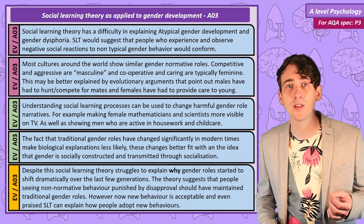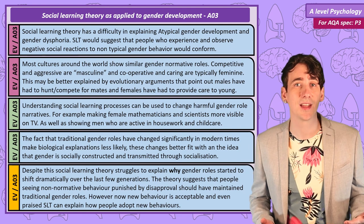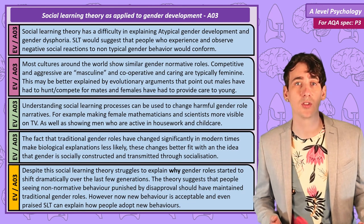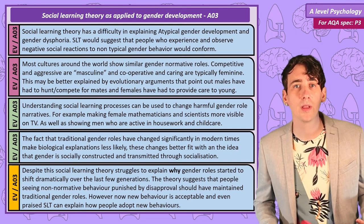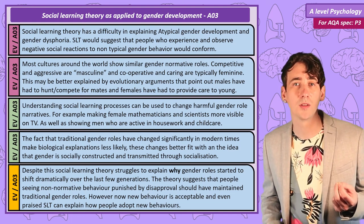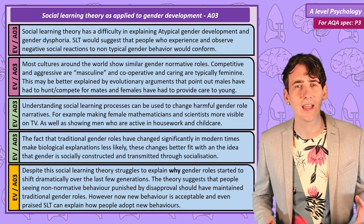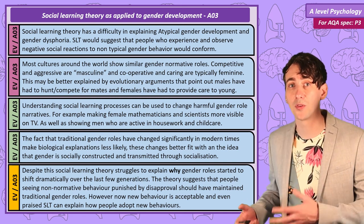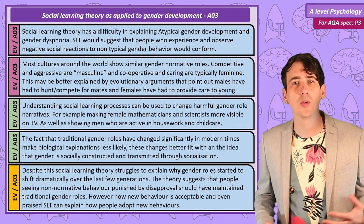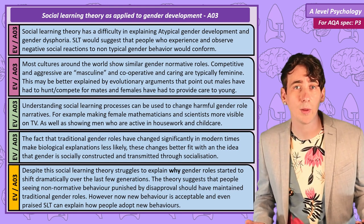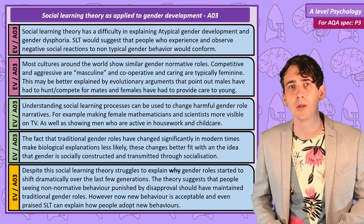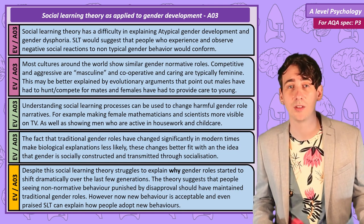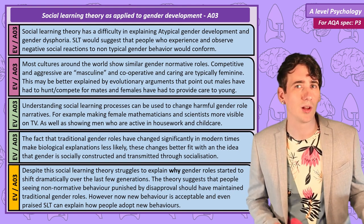While social learning theory fits better with the fact that gender roles have changed — as it suggests gender isn't an essential biological process — it doesn't really explain how they've changed. SLT explains how gender roles are maintained over time: people see gender-normative behaviour as rewarded, so it's reinforced, and anyone who deviates is punished by disapproval, while others learn through vicarious reinforcement to behave normatively. Once new gendered behaviour becomes acceptable, SLT can explain how people adapt, but new gender-normative behaviour has to become acceptable first — and answering what ended traditional gender roles would likely move us out of psychology and into politics.